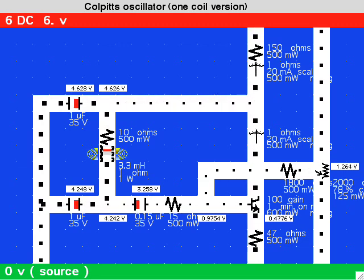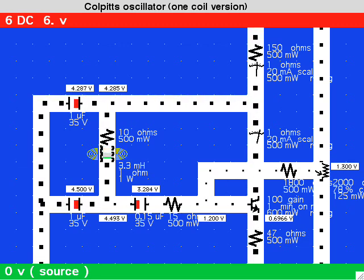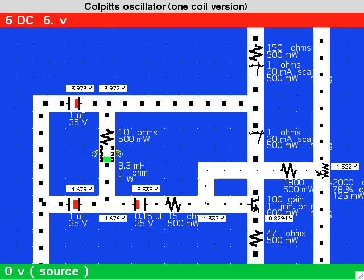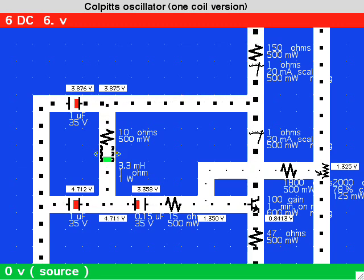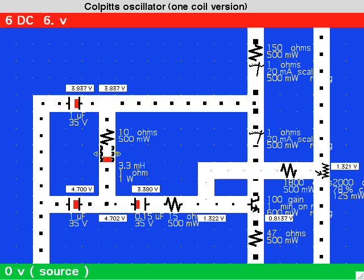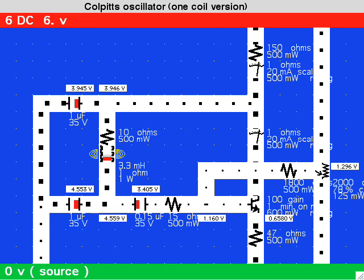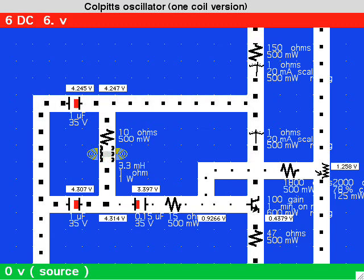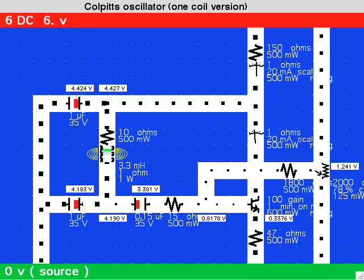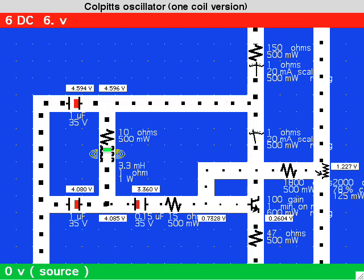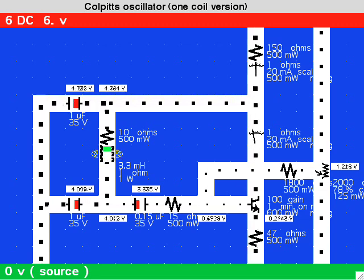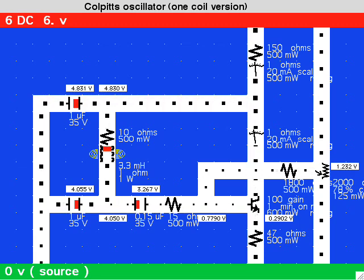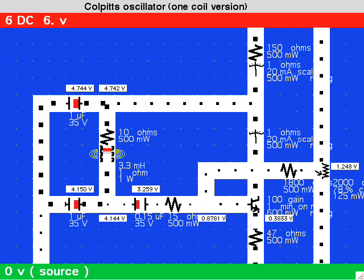Again, watch the wires which go off to the right from the top and bottom of the tank loop. The direction of current and current reversals in those wires matches each other, but curiously enough, they are not following the current flow and reversals in the tank loop.